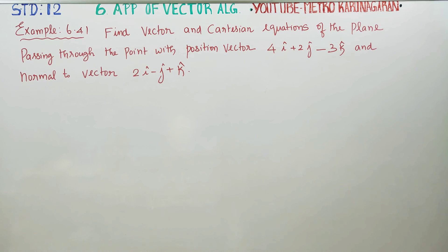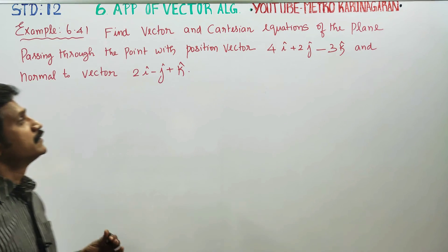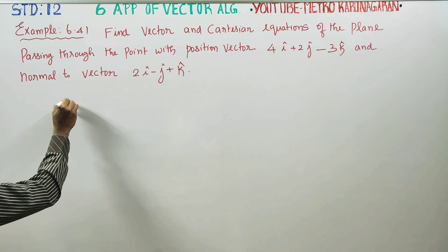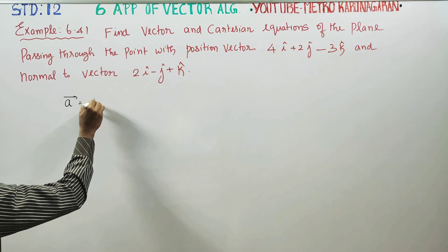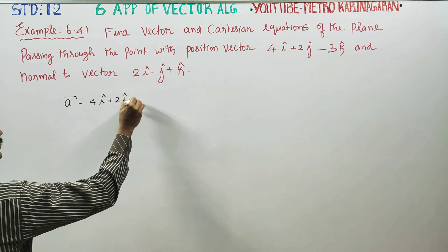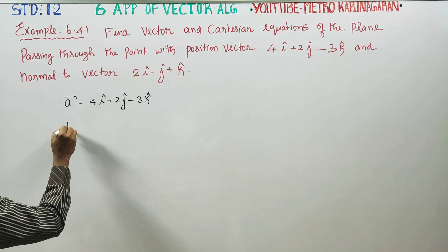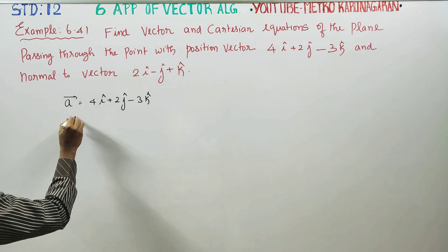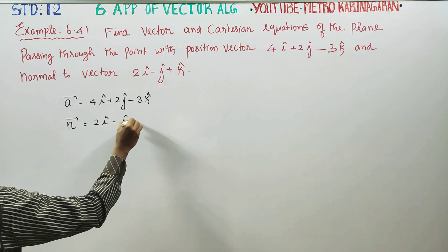Dear 12th standard students, in example 6.41, find the vector equation and Cartesian equations of the plane passing through the point with position vector a = 4i + 2j - 3k, and normal vector n = 2i - j + k.